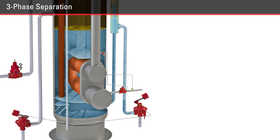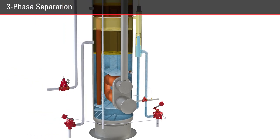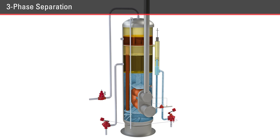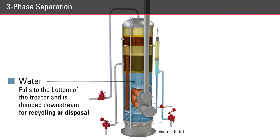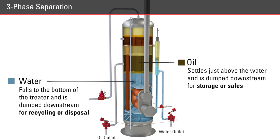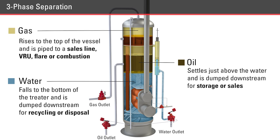Whether the treater is vertical or horizontal, all heater treaters are considered three-phase separators, meaning all three phases of separation take place. Water falls to the bottom of the treater and is dumped downstream for recycling or disposal. Oil settles just above the water and is dumped downstream for storage or sales. Gas rises to the top of the vessel and is piped to a sales line, VRU, flare, or combustor.